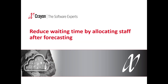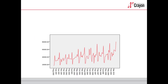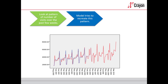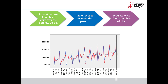The next example is to reduce waiting time by allocating staff after forecasting. So how could we do the forecasting? We can do it simply by looking at the pattern of the number of visits over the past few weeks. The model then tries to recreate this pattern, and after that you can predict what the future number will be. This is called time series analysis.